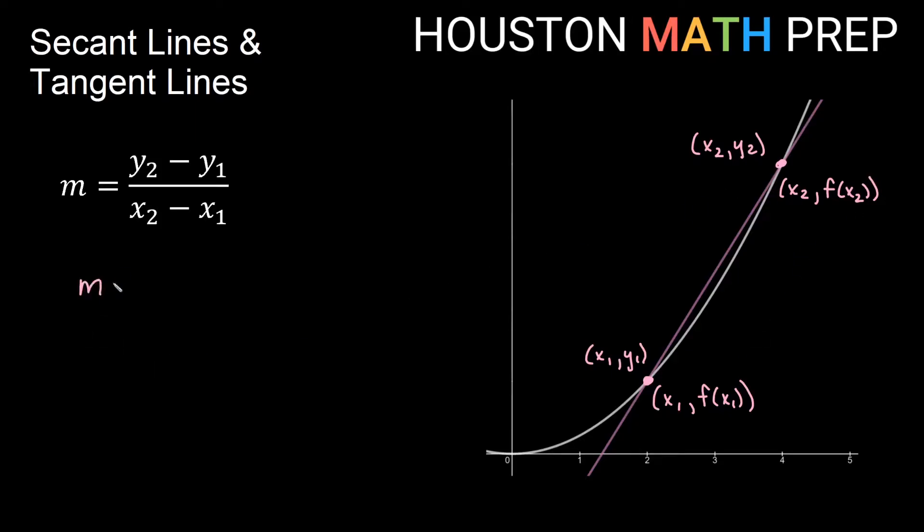So we're going to write this formula in terms of our new notation. Our y values are going to change into function notation, and our x values stay the same. So we would have f of x2 minus f of x1, and then on the bottom we'll still have x2 minus x1. This is our new function version of the slope formula.